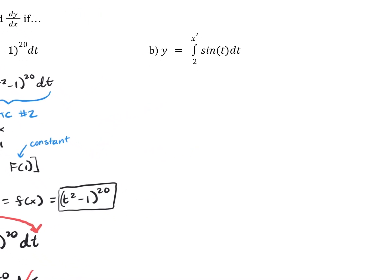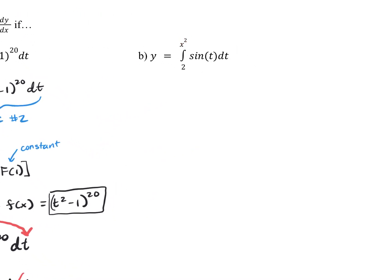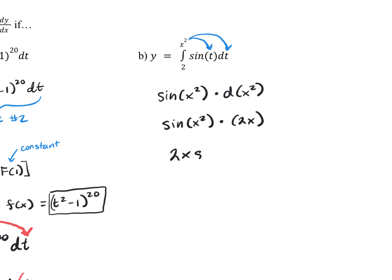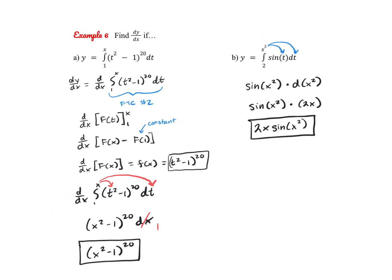Next, if the upper boundary is x² instead of x, we apply the chain rule. Using FTC Part 1, we substitute x² for t, getting sin(x²), then multiply by the derivative of x², which is 2x. So dy/dx = 2x·sin(x²).